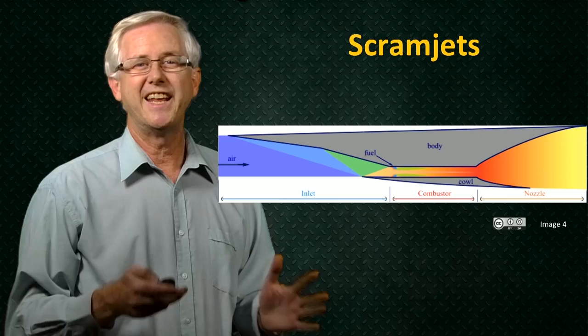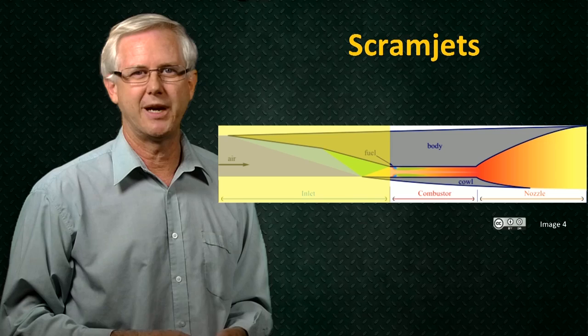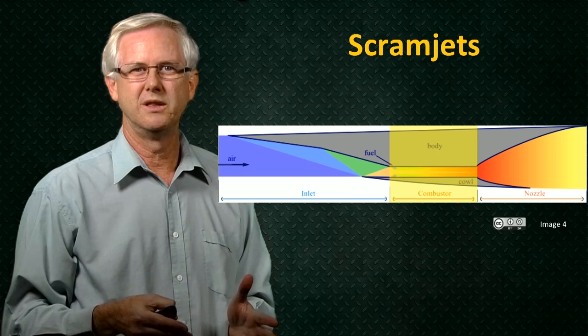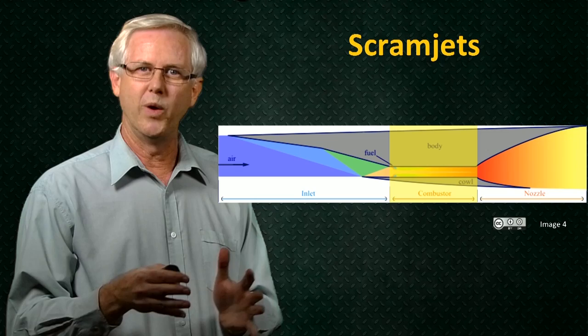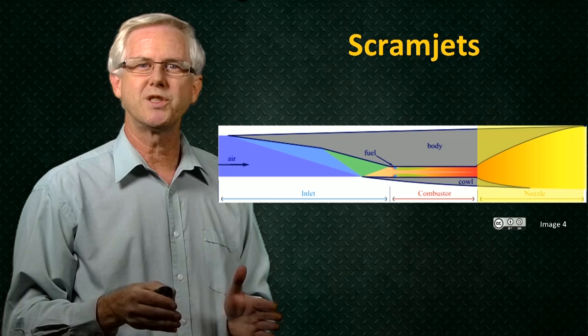And an engine that does just that is called a scramjet. So a scramjet engine has an inlet where we slow the flow down, raising its pressure and temperature. We have a combustor where we inject some fuel. The flow is still travelling supersonically through the combustion chamber where the fuel burns and releases its heat. Maybe it slows down a little, but it still stays at a supersonic speed.